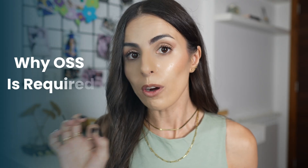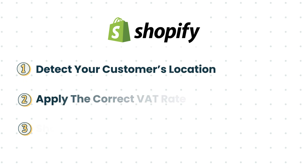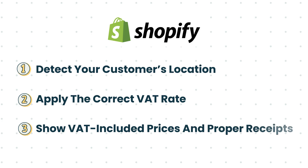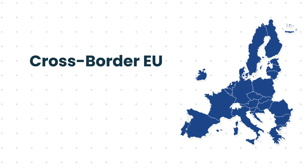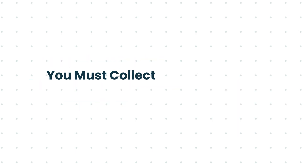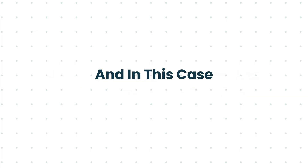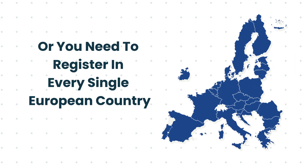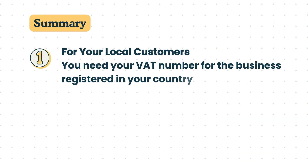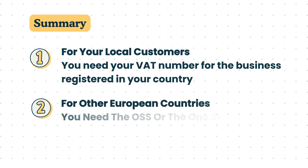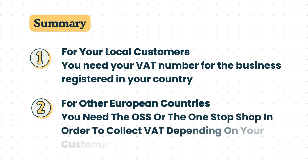I'll explain why OSS is required, but first let me tell you what this setup will help you achieve in Shopify. By doing this setup correctly, you allow Shopify to detect your customer's location, apply the correct VAT rate, and show VAT-included prices with proper receipts. OSS stands for One-Stop Shop and it is required when your cross-border EU sales exceed 10,000 euros per year. Without OSS, you would need to register in every single European country, which is not practical. So as a summary: for your local customers you need your VAT number; for other European countries you need OSS to collect VAT based on each customer's country.